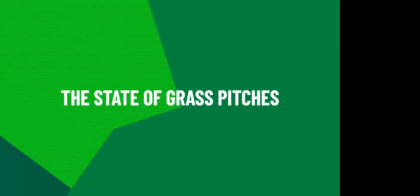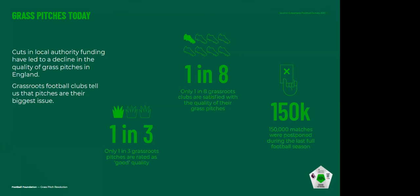The state of grass pitches in England probably isn't where we'd like it to be. There's been a decline in local authority funding in recent years which is probably only going to get worse with the impact of Covid, and that's led to a massive decline in the quality of grass pitches in the last few years. Grassroots football clubs tell us through surveys by the FA and other partners that grass pitches are their biggest issue in terms of having somewhere of a good standard to play and train.